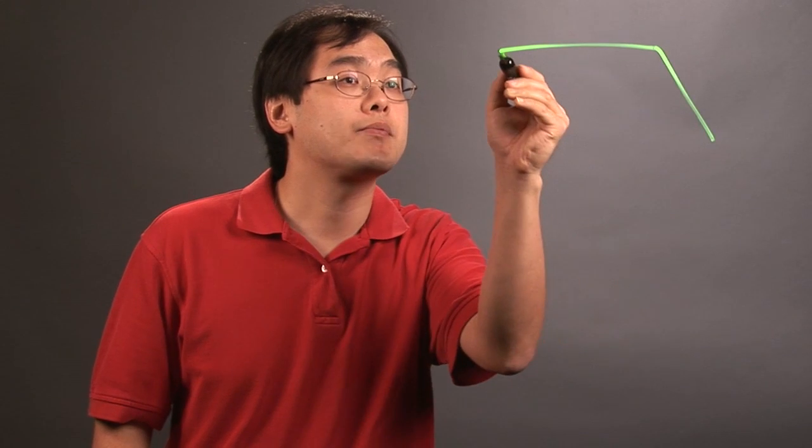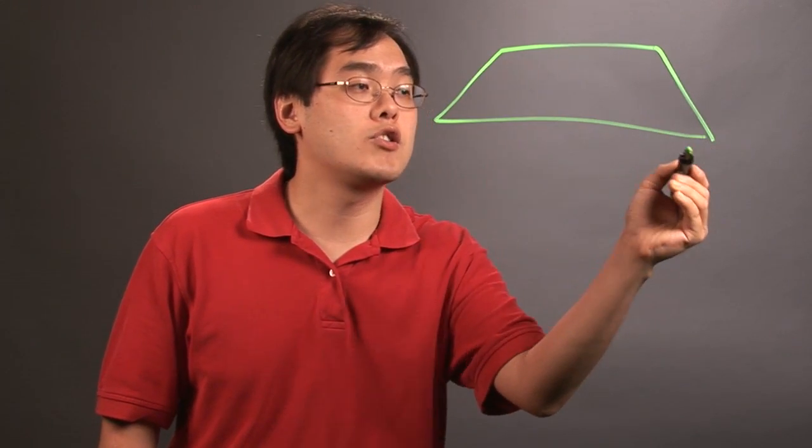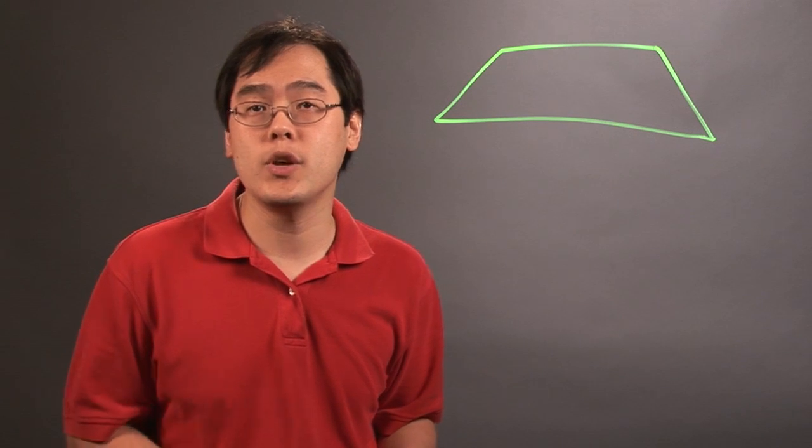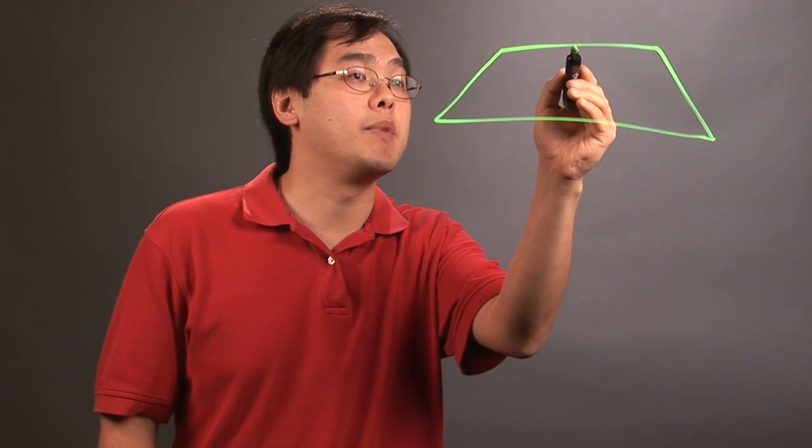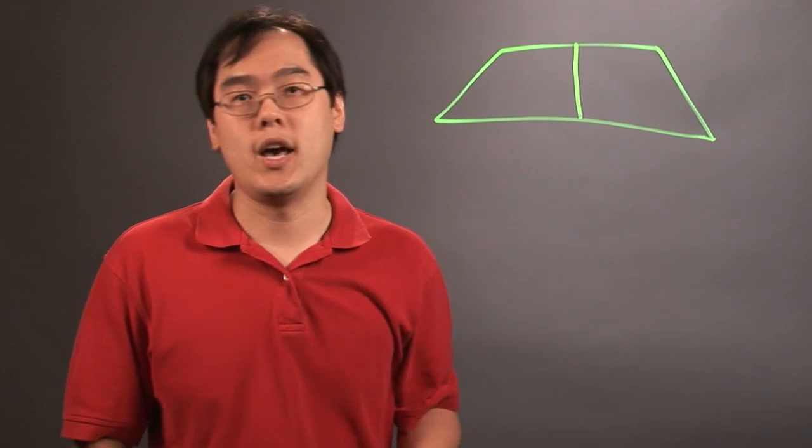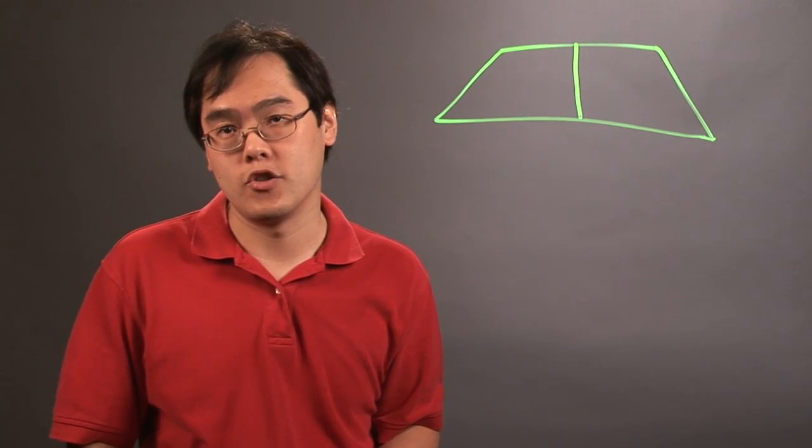So, if you have a trapezoid, and these are all just going to be rough sketches going forward, if you want to determine, for example, you want to divide it into two equal parts, then the logical thing would be to take a look at the middle of the bases, and then draw a line, and you have two equal parts of the trapezoid.